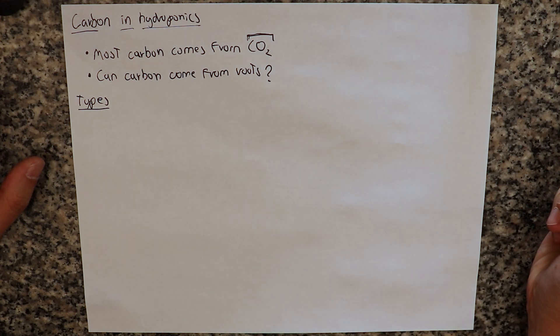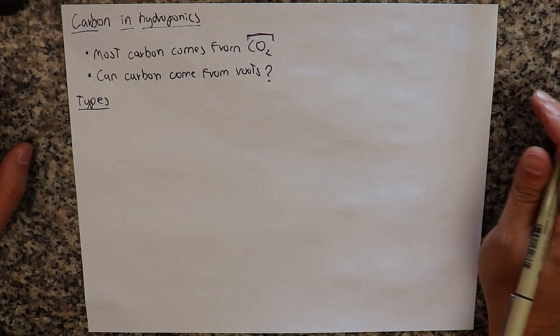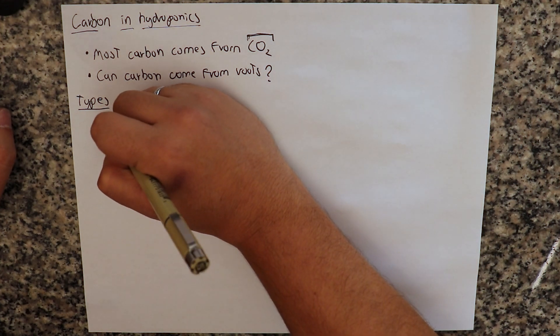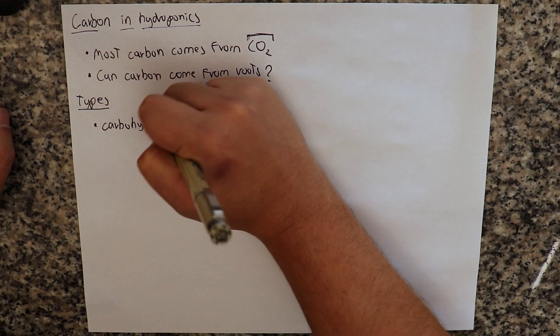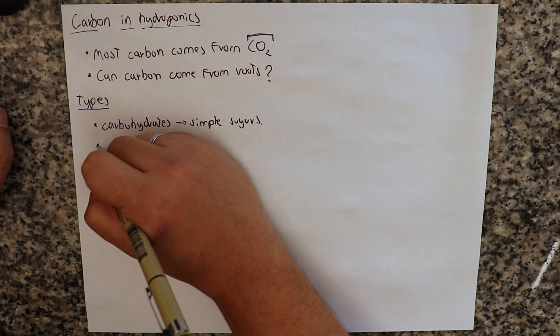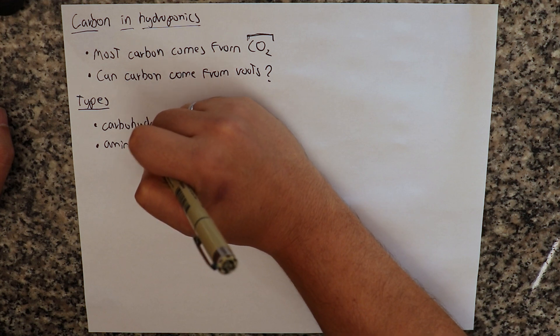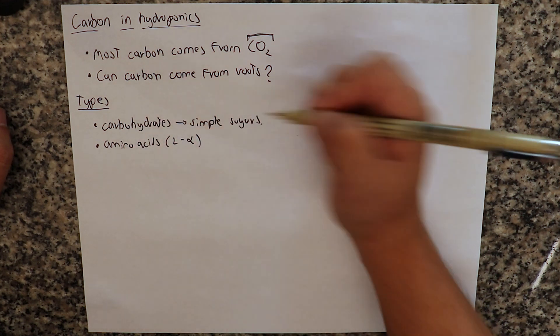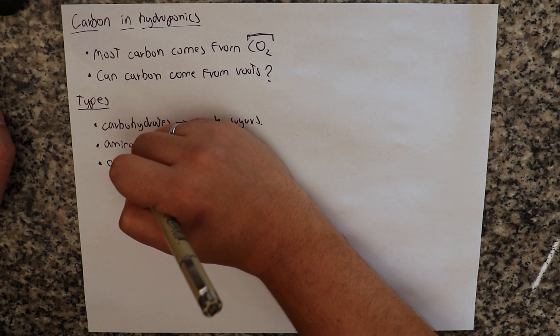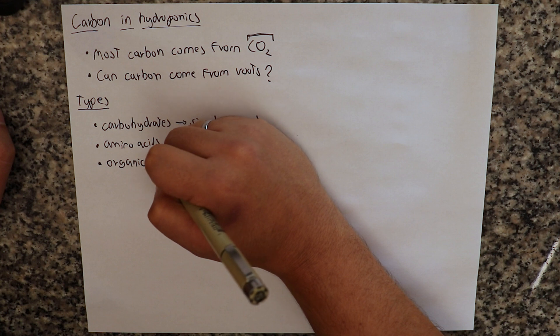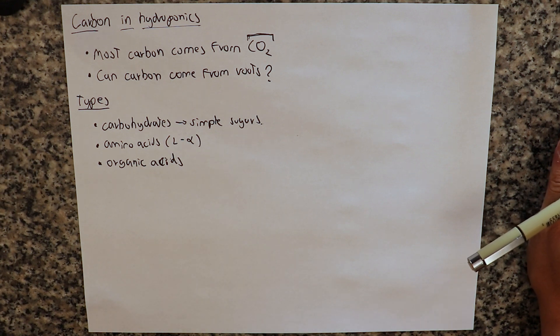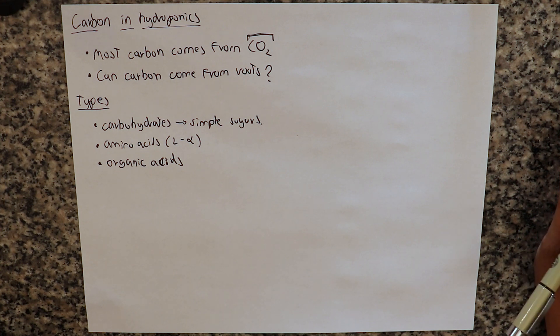So I am going to be talking about three types of what we call exogenous carbon, which is carbon that is not going to be created or in any way made or transported by the plant, but simply carbon that we're adding from external sources. We're going to be talking about carbohydrates, and by this I mean simple sugars. We're also going to be talking about amino acids, particularly L-alpha amino acids, which are the ones present in living things. And we are also going to be talking about organic acids. Organic acids are acetic acid, citric acid, these types of acids that are produced by organisms.